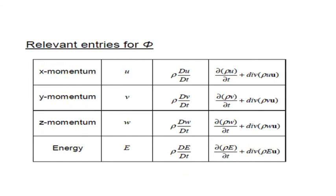Next, the relevant entries of φ for x, y, z momentum and energy. For x-momentum, the direction is u, the velocity is u, the variable is ρ Du/Dt, and the expression is ∂(ρu)/∂t + ∇·(ρuu). Similarly for y and z. For energy, the notation is e, the variable is ρ De/Dt, and the expression is ∂(ρe)/∂t + ∇·(ρeu).